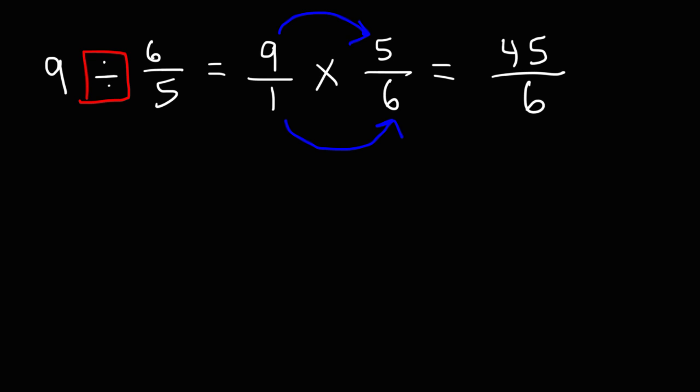Now 6 doesn't go evenly into 45. So we need to reduce or simplify the fraction. How can we do that? Now we know that 45 is 9 times 5. 6 is 3 times 2. So you want to break down the large numbers into smaller numbers.